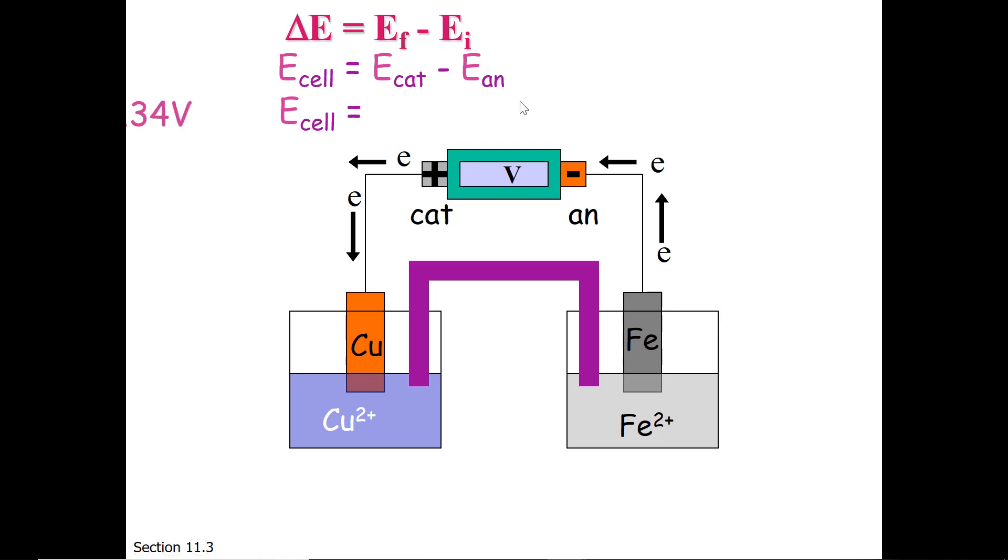So E-cell is going to be the reduction potential of the cathode, which is copper, and that is plus 0.34, and a negative reduction potential of the anode, which is the iron, which is minus 0.44. The net value is plus 0.78 volts.